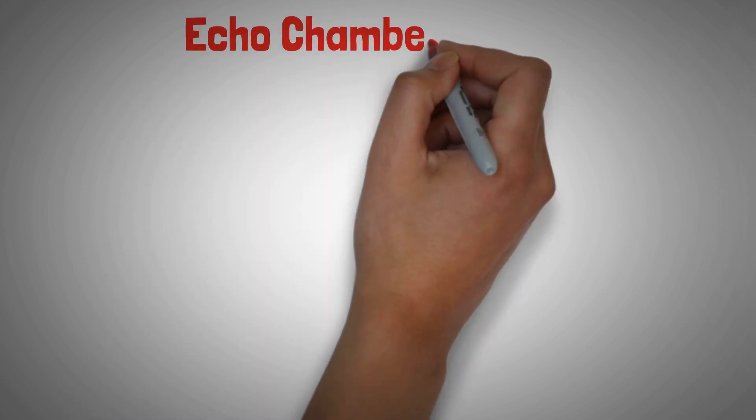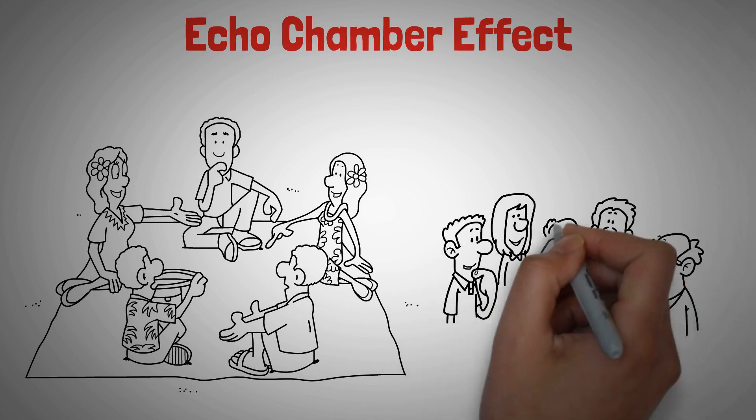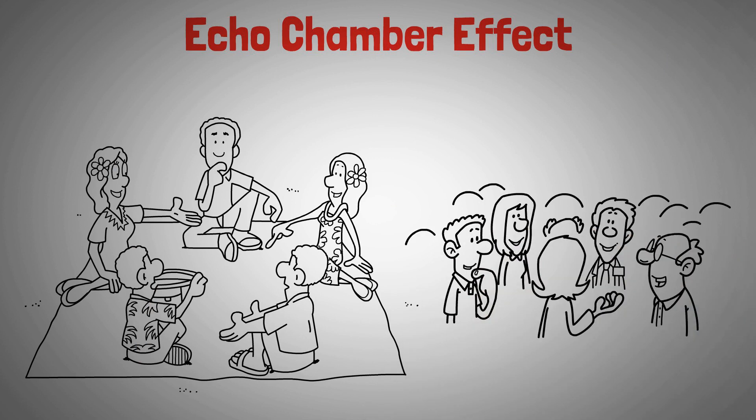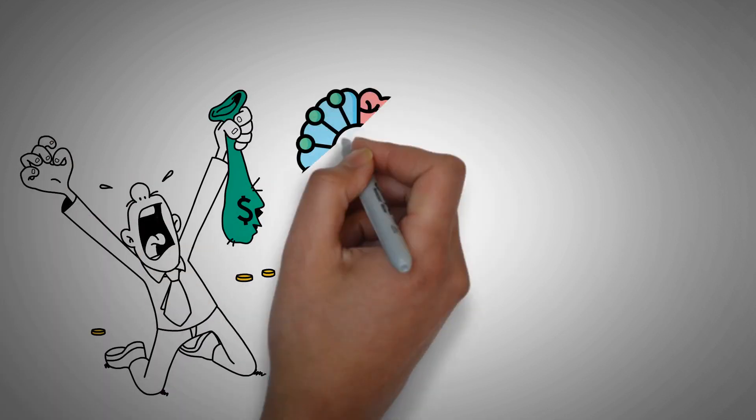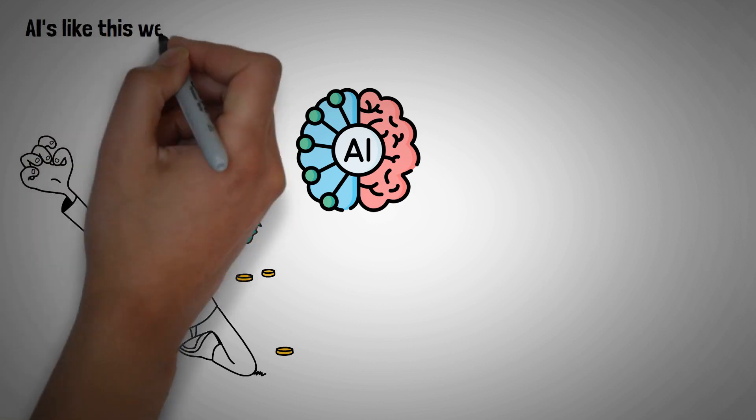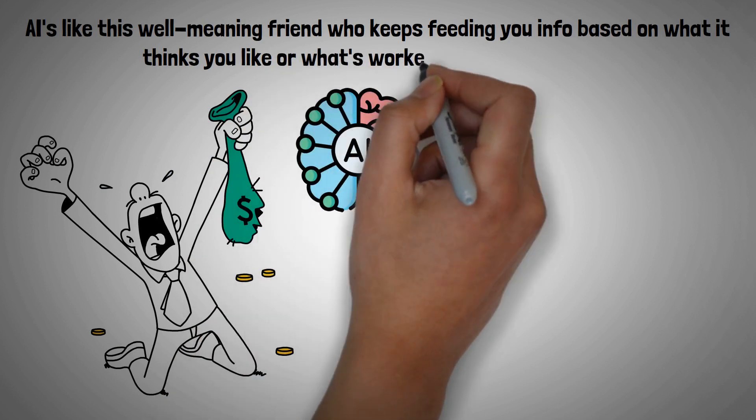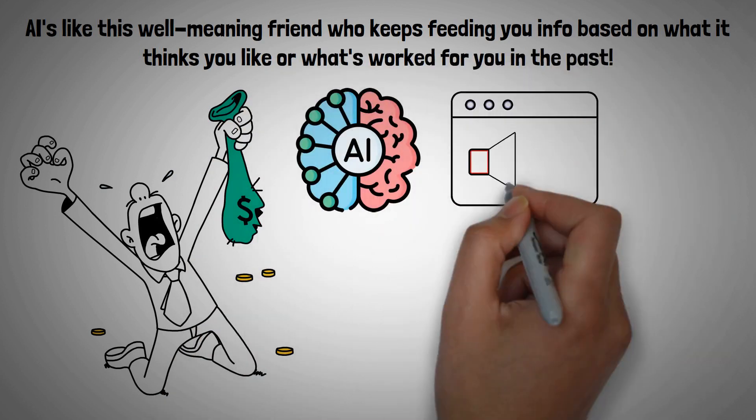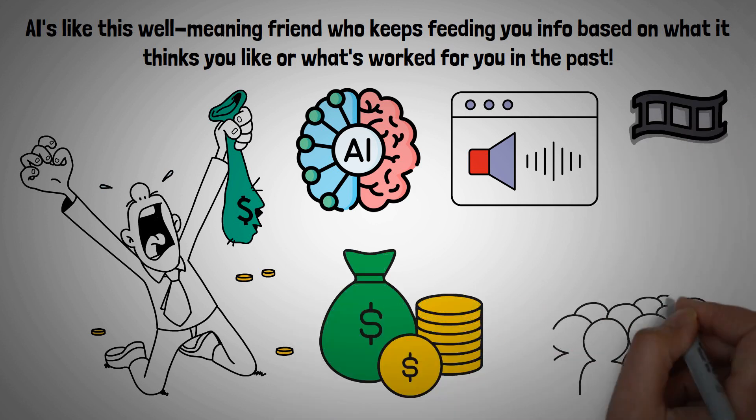Number four, echo chamber effect. If you're only hanging out with people who think just like you, they're all nodding and agreeing with you all the time. But here's the thing. You might be missing out on some really interesting different viewpoints. This is what can happen with your money matters when you're getting all your advice from AI. So AI is like this well-meaning friend who keeps feeding you info based on what it thinks you like or what's worked for you in the past. This is cool for things like choosing music or movies, but in finance, it's a whole different ballgame. You need a variety of opinions and strategies, especially since the financial world is so wide and varied.